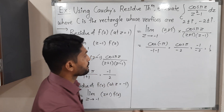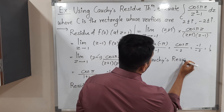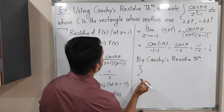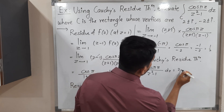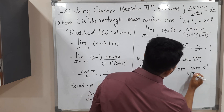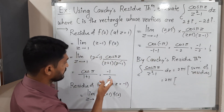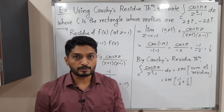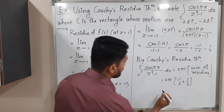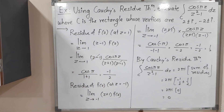By Cauchy's residue theorem, the integral over C of cos(πz)/(z²-1) dz = 2πi × (sum of residues) = 2πi × (-1/2 + 1/2). The two residues are equal in magnitude but opposite in sign, so they cancel: 2πi × 0 = 0. The value of the integration is zero. Problem is over — see you in the next video, thank you.